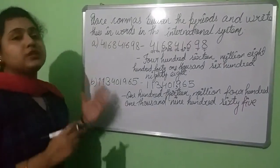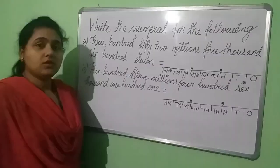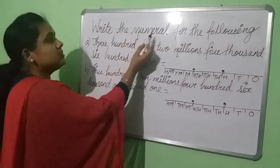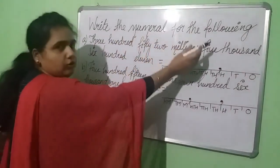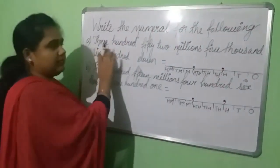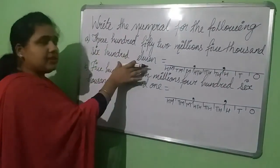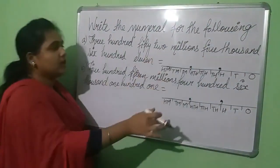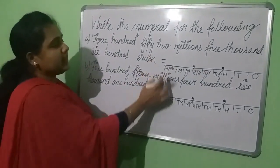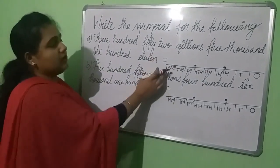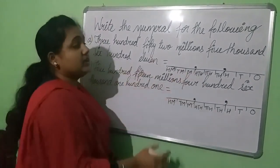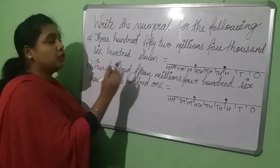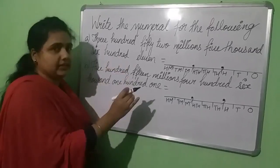Now we are going to do the second question. The second question is: write the numerals for the following. We have the number names and we have to write the numerals. You can see that I have drawn a place value chart, which will help you to write the numerals correctly.